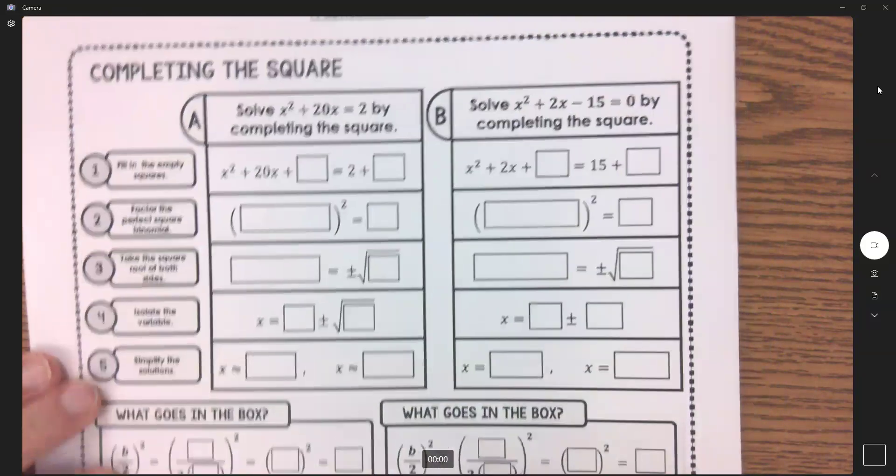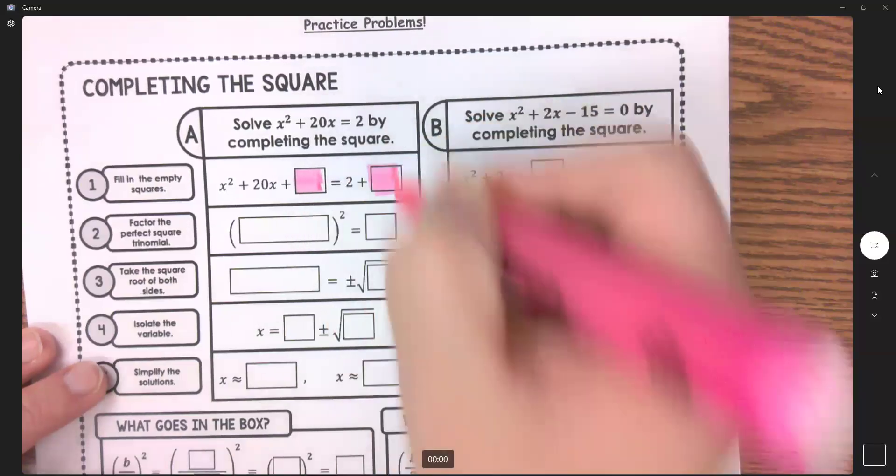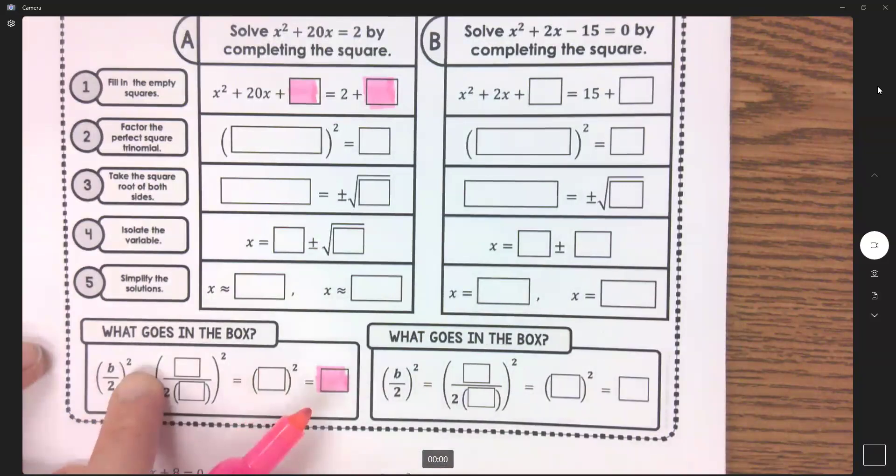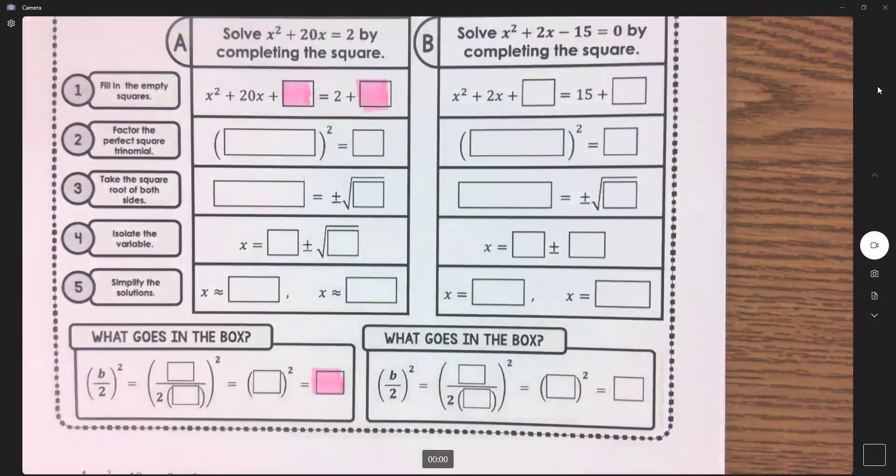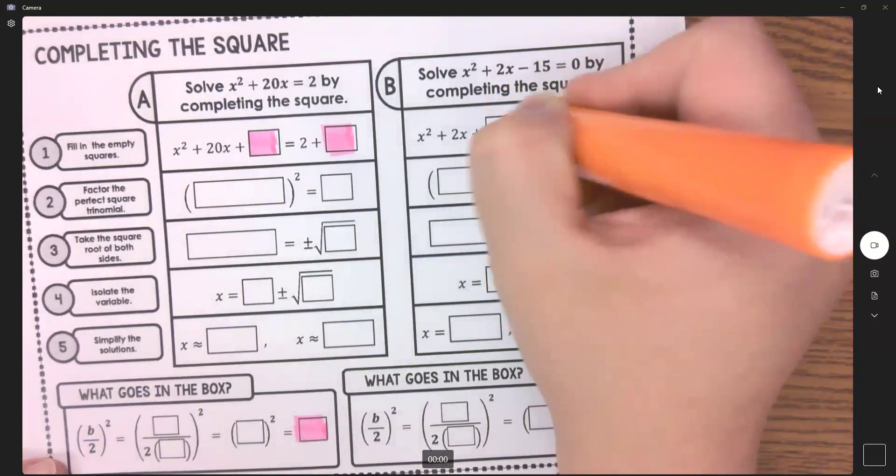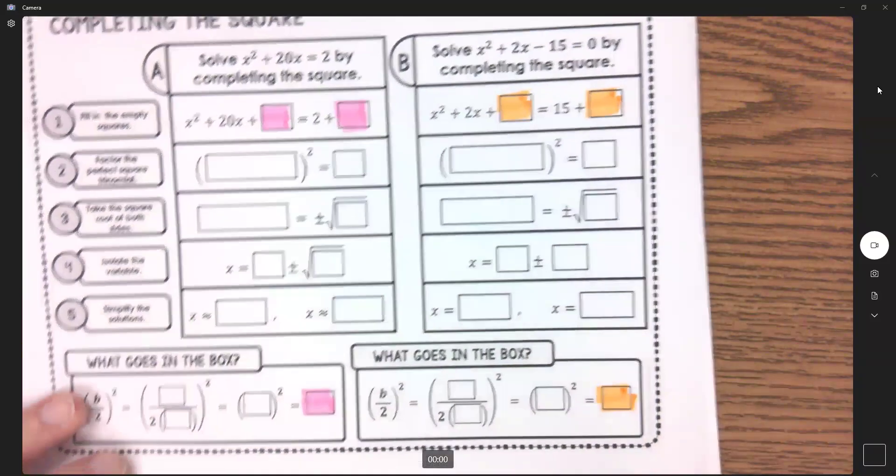It's asking what goes in this box from right here. That's your B over two quantity squared. What goes in this box comes from right here.